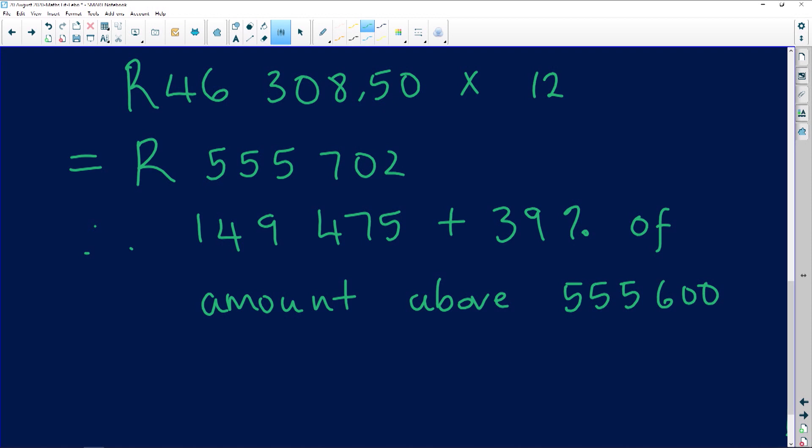Interesting. So whenever you see this amount above, it means there's going to be subtraction taking place. There's going to be some sort of subtraction that is taking place over there. I use it exactly the way it is, guys. R149,475 plus, so now 39% of...